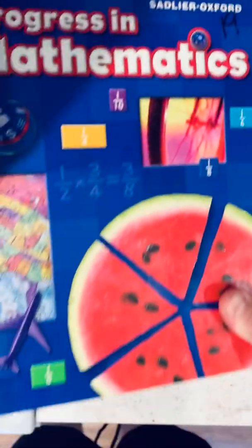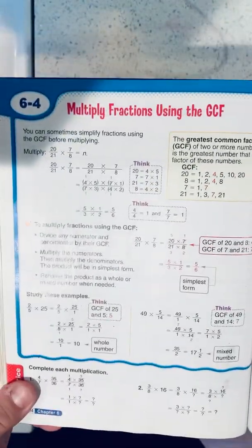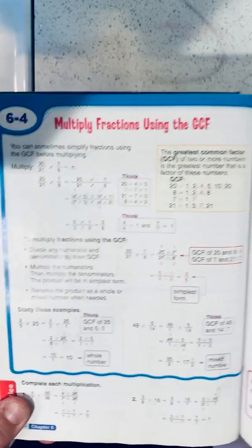Hey 5th graders, Mr. Dallas here. Hope everyone's doing well. Today we're going to look at 6.4 in our textbook, on multiplying fractions using the GCF, greatest common factor.